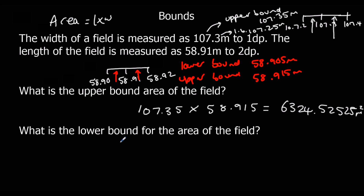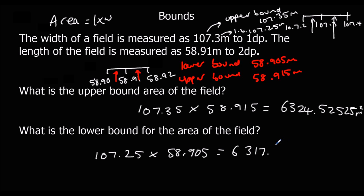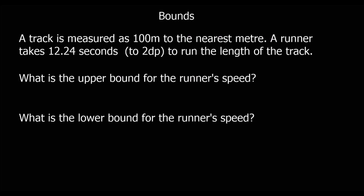Typing that into the calculator: 107.35 × 58.915 gives 6324.52525 meters squared. The lower bound is the lowest width, 107.25, multiplied by the lowest length, 58.905, which gives 6317.56125 meters squared. So the actual area of the field is somewhere between these two values.